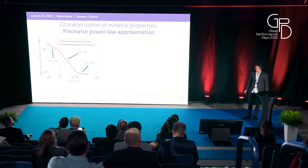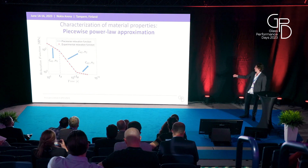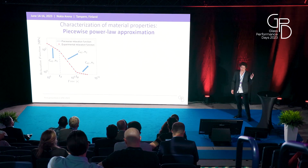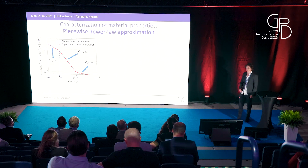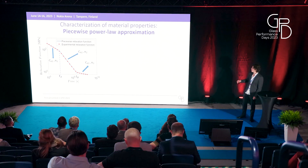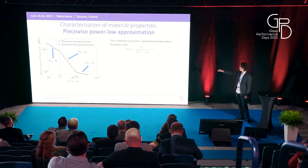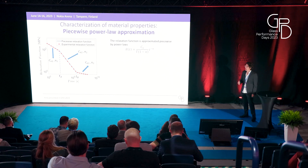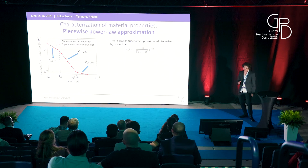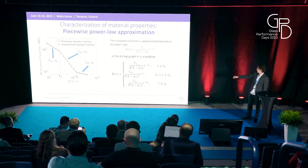The other way to represent the relaxation function is through power laws. Here we see the same relaxation function shown with red dots, and a piecewise function composed of three power laws that fits very well. The power law is represented by an equation with two parameters: C_n, the stiffness of the interlayer, and n, which is the slope of the line in the log-log graph.